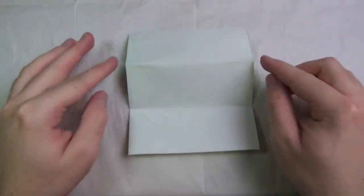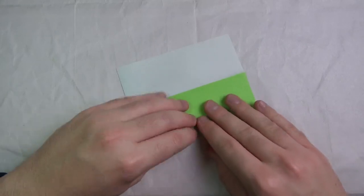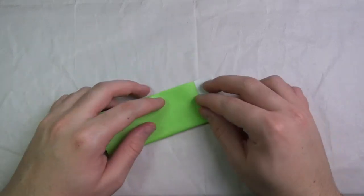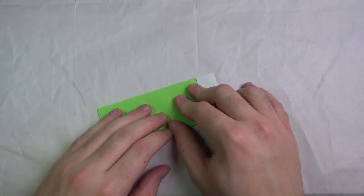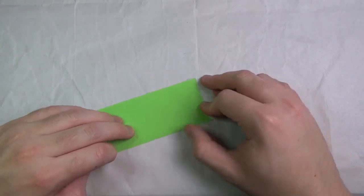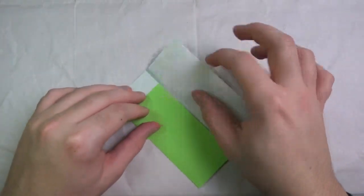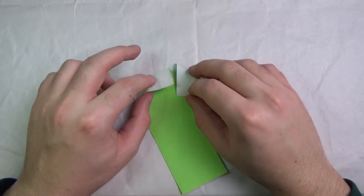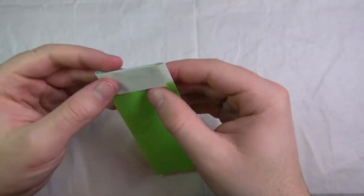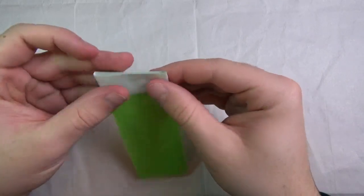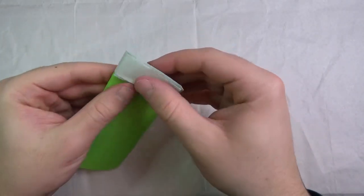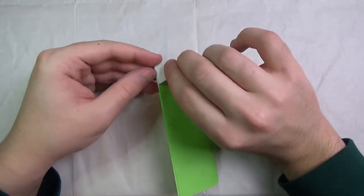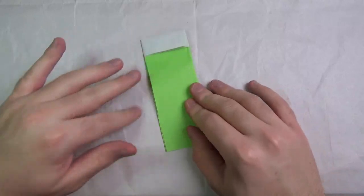And now fold this edge to these two crease marks. Just like this. Now unfold just this side. And now we're going to lift this up and we're going to tuck this edge into this slot. So just stick it underneath here. Just like this. And put it as far as it goes. It's a little bit tricky. Kind of just work it in there. There we go. Got it. And flattened it.